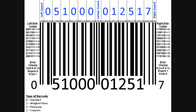The next set of five numbers tells us who the manufacturer of the product is — in this case, it's the Campbell Soup Company. The second set of five digits tells us the product code, which in this case is a 10 and 3 quarter ounce can of chicken noodle soup.